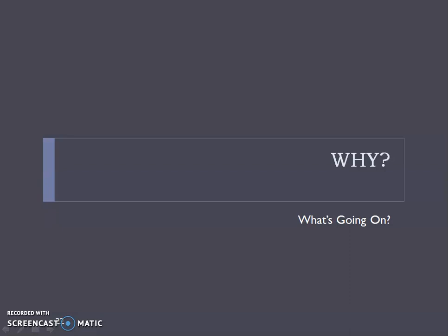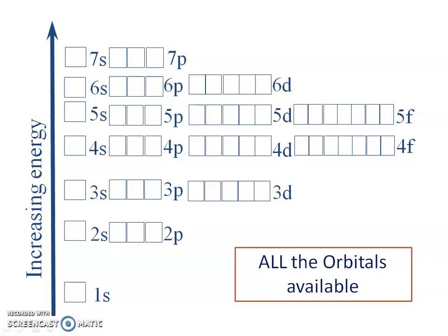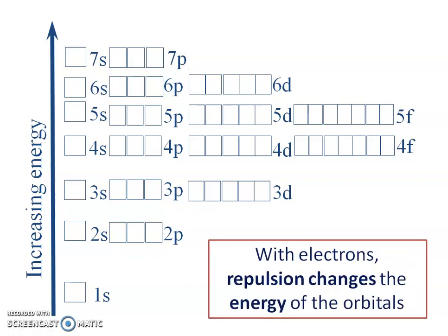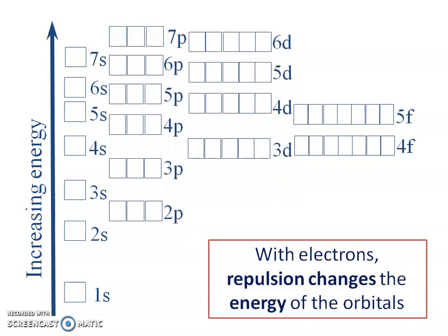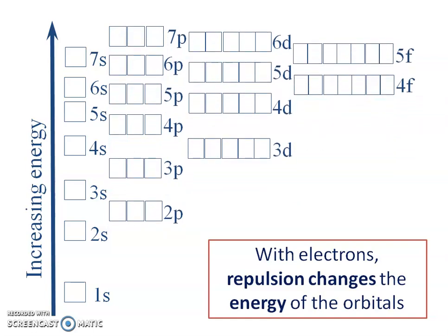Why does the 3D subshell behave this way? All these orbitals are available to every single element. When we add electrons, they repel each other because they have the same charge, so the energy of the orbitals changes. Those energies of the sub-levels adjust themselves because the electrons are repelling each other — that's why the 4S has less energy than the 3D and fills first.